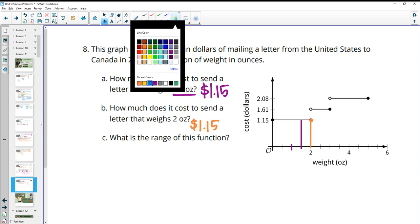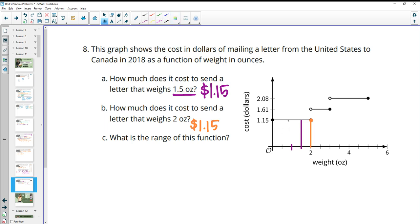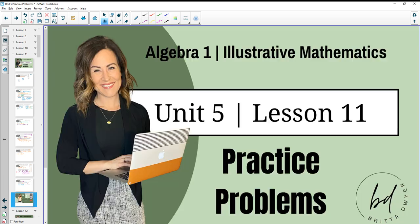What is the range of this function? So the range is the Y values that, well, in this case, the cost that can be kicked out. So we've got, this is at $1.15, then we've got $1.61, then we've got $2.08, and there's nothing in between. So the range of this function is just those three values, $1.15, $1.61, and $2.08.